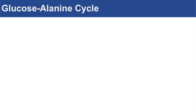Hey everyone, this lesson is on the glucose alanine cycle. Today we're going to talk about how the skeletal muscle and the liver utilize the glucose alanine cycle to process and recycle nitrogenous waste from the skeletal muscle. The glucose alanine cycle is also known as the Cahill cycle.